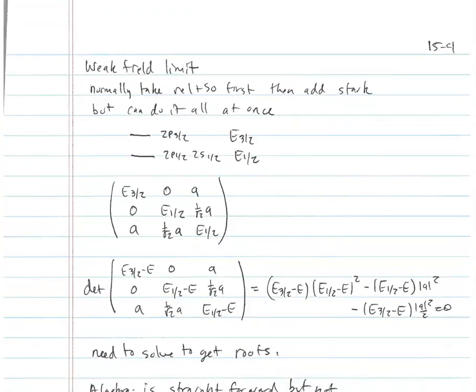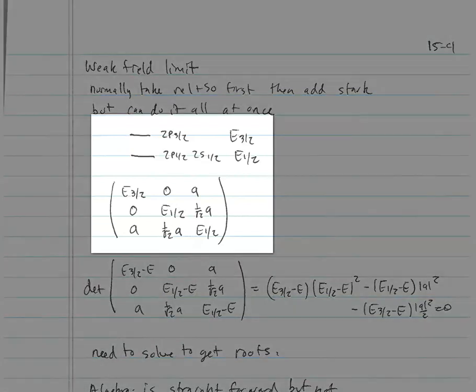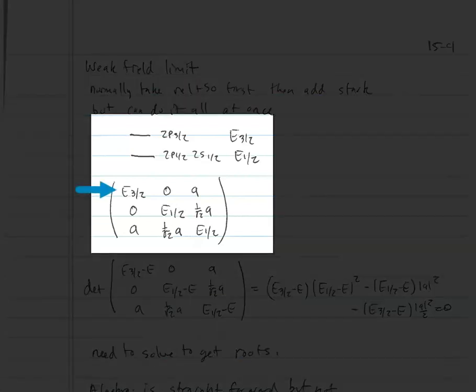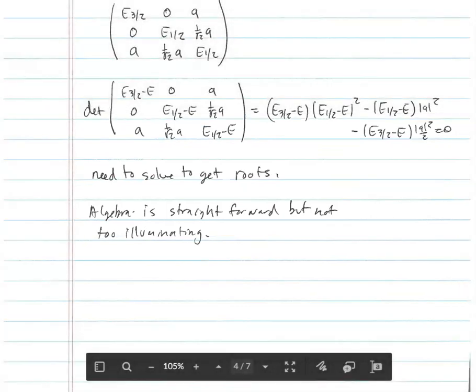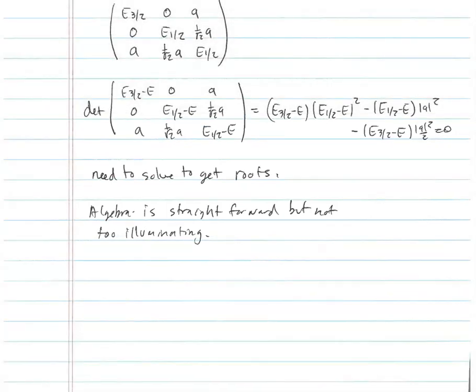In the weak-field limit where we include fine structure, the only change is the diagonal entries become E_{3/2}, E_{1/2}, E_{1/2}. The determinant is more complicated — nothing factorizes out, so you need to solve for all roots. In general, you'd use Wolfram Alpha, because even though cubic equations can always be solved, working through the solutions by hand is often painful.